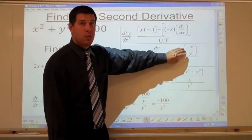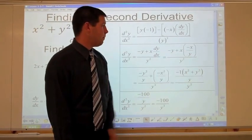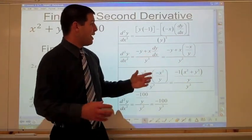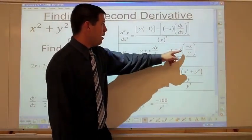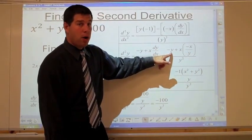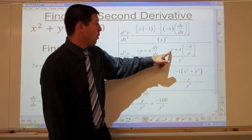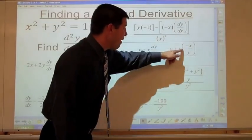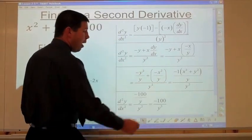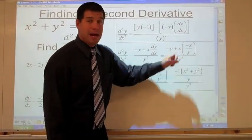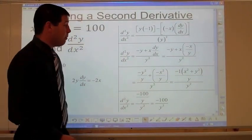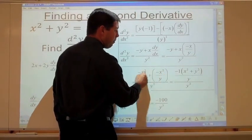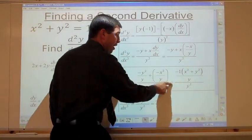Now we have an expression with all x's and y's. To clean up the fraction in the numerator, rewrite negative y as negative y squared over y, and x times (negative x over y) as negative x squared over y. So the numerator becomes (negative y squared plus negative x squared) over y, all over y squared. Factor out negative 1 to get negative (x squared plus y squared) over y, all over y squared.